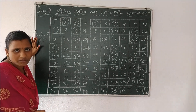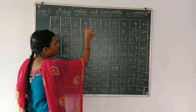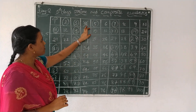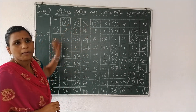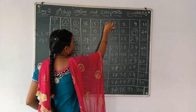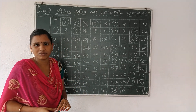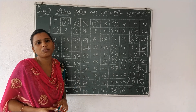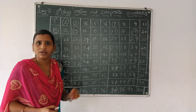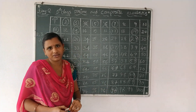From the 2 table, like 4, cross composite numbers. Cross composite numbers and circle prime numbers. 4 is a composite number, 6 is a composite number. Except 2, all even numbers are composite numbers. So cancel all even numbers up to 100.